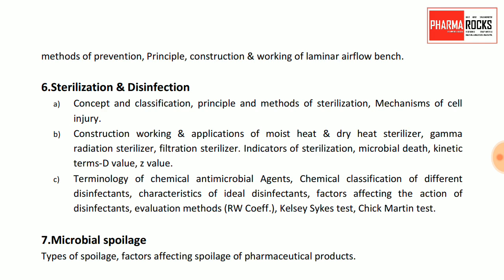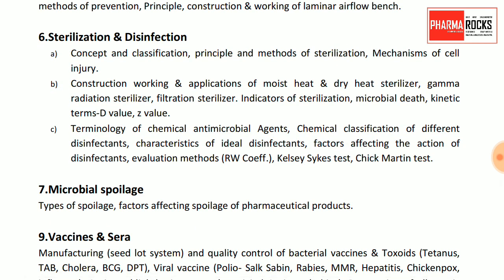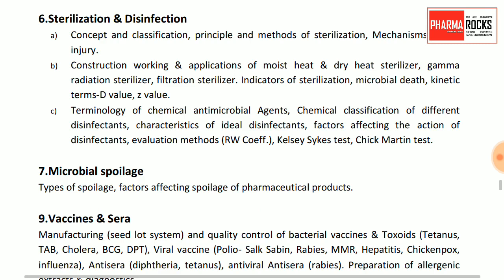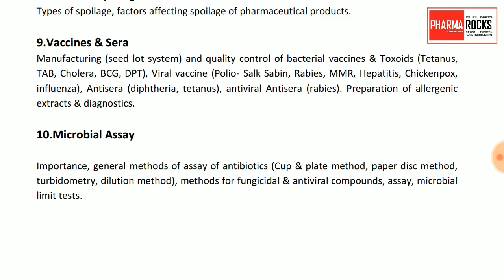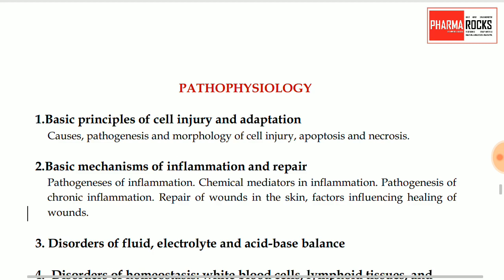The most important chapter is sterilization and disinfection — never skip this for GPAT. Cover the concept, classification, principles, methods of sterilization, mechanism of cell injury, construction/working/application of moist heat, dry heat, gamma radiation, filtration sterilization, sterilization indicators, D value, Z value, and spoilage. Vaccines and sera are important every year — BCG vaccine, DPT, TAB. Then microbiological assay.